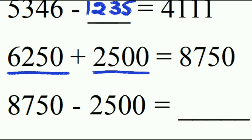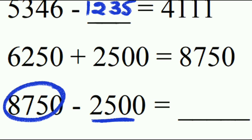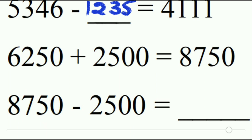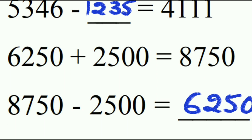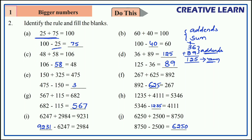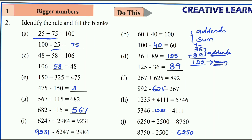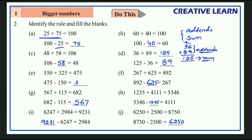For the last one, the sum of the two addends gives the total sum, and the remaining addend is 6250. From all these blanks we conclude: when we add two or more numbers (addends), we get the sum. When we subtract one addend from the total sum, we get the remaining addend. That is the rule.